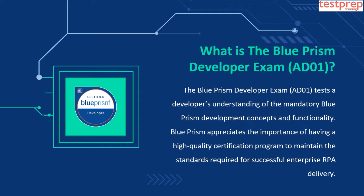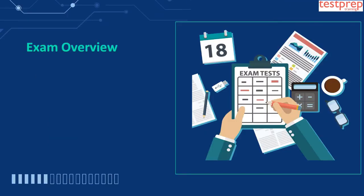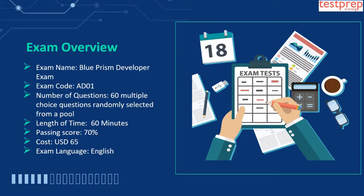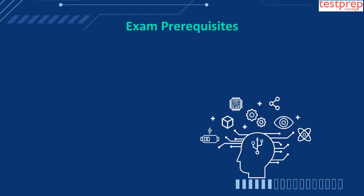Candidates need to qualify the AD01 exam before starting your Blue Prism Professional Developer certification preparation. Exam overview: exam name is Blue Prism Developer Exam; exam code is AD01; number of questions are 60 multiple choice questions randomly selected from a pool; length of time is 60 minutes; passing score is 70 percent; cost is USD 65; exam language is English.